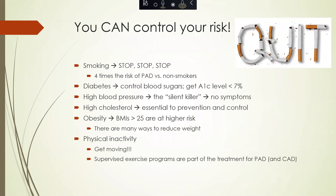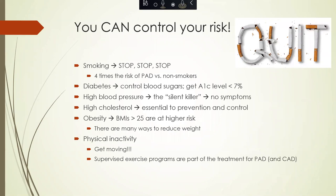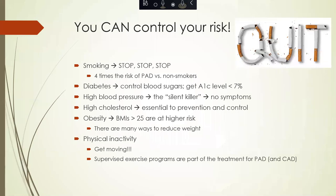If you have diabetes, the best way to control things is to have your blood sugars controlled through diet, exercise, and medications. Mainly, the goal is to get your A1C level less than 7%.